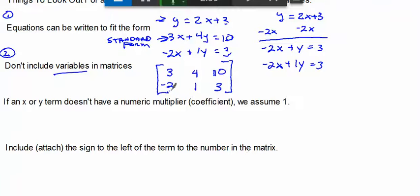That will be our augmented matrix. So you can write an equation to fit the form. Don't include variables in matrices. If an x or y term doesn't have a numeric multiplier, we assume 1.